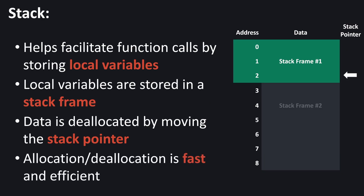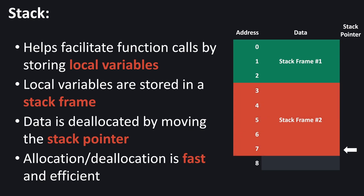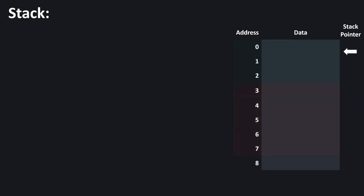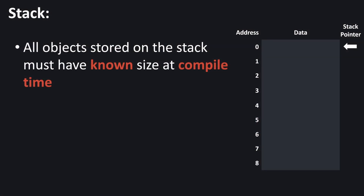Because we're just moving a stack pointer, allocation and deallocation is very fast when using the stack. Whenever we call a new function and allocate a new stack frame, we simply move the stack pointer to compensate, and once we no longer need that memory, we move it back. However, the stack has a few restrictions. The first is that all objects placed on the stack must have a known size at compile time — if an object's size isn't known ahead of time, how do we know how far to move the stack pointer to point to the next free address?